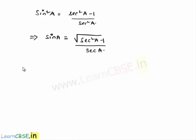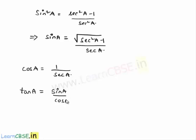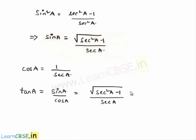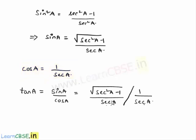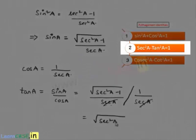Cos a = 1/sec a. Now let us express tan a in terms of sec a. Since tan a = sin a / cos a, substituting: tan a = [√(sec²a - 1)/sec a] ÷ [1/sec a]. The sec a in the numerator and denominator cancel, leaving tan a = √(sec²a - 1).